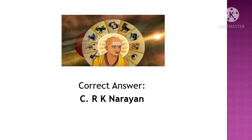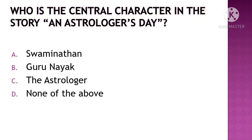Next question: Who is the central character in the short story An Astrologer's Day? The options are: A. Swaminathan, B. Guru Nayak, C. The Astrologer, D. None of the above. The correct option is Option C, the astrologer.